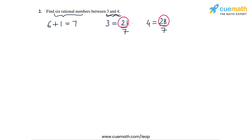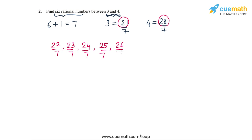So we can take the rational numbers 22 by 7, 23 by 7, 24 by 7, 25 by 7, 26 by 7, and 27 by 7, which are all rational numbers lying between 3 and 4, because we wrote 3 as 21 by 7 and 4 as 28 by 7.